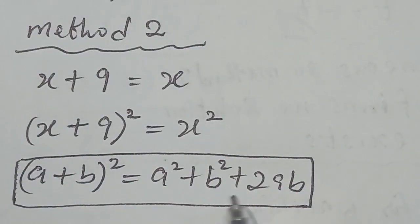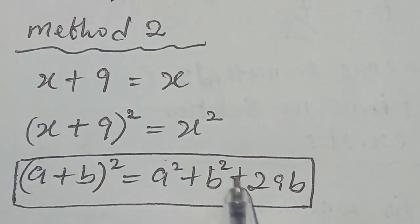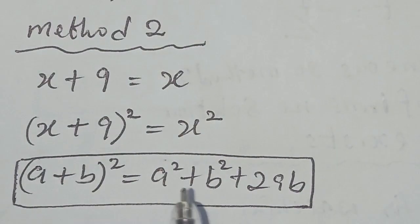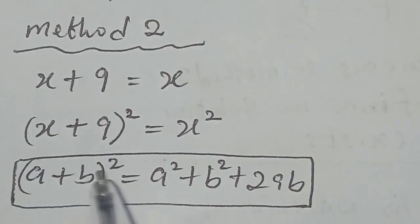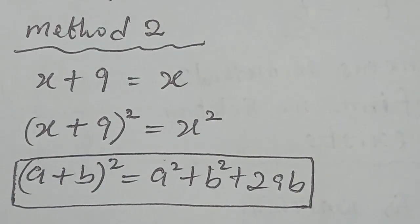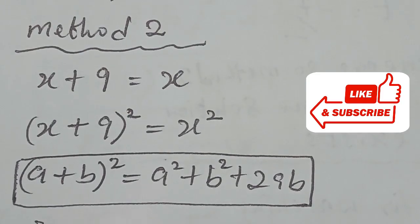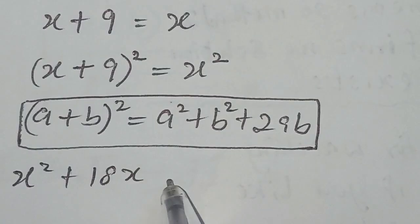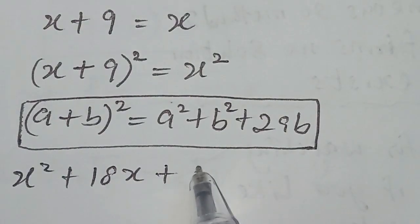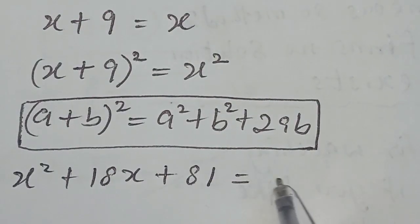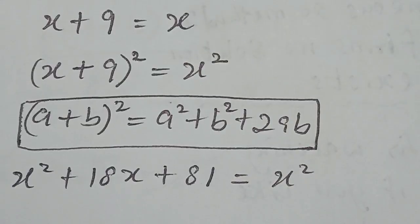Using this identity, we use it to expand the left-hand side. If we expand the left-hand side with this identity, our left-hand side now becomes x squared plus 18x plus 81 equal to x squared.